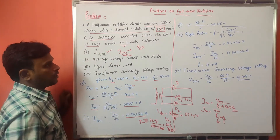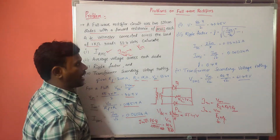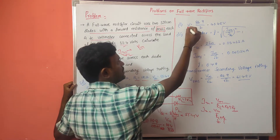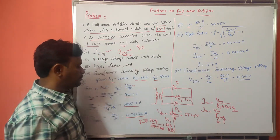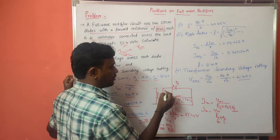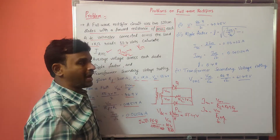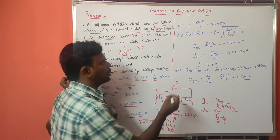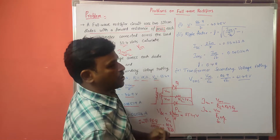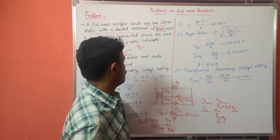Next, the average voltage across each diode. The average voltage across each diode is Vm divided by 2. Since we are applying Vm on each side, the average voltage is 86.9 divided by 2, which gives 43.45 volts.